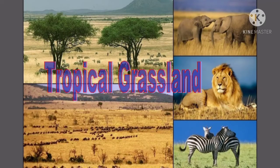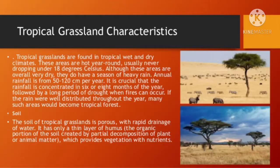Tropical grasslands can be found on both sides of the equator. The area receives about 500 to 1500 millimeters of rainfall per year and has temperatures ranging between 15 to 35 degrees centigrade. The common grass grows 3 to 4 meters in height and is popularly known as elephant grass. Many parts of these grasslands are used for grazing or farming.